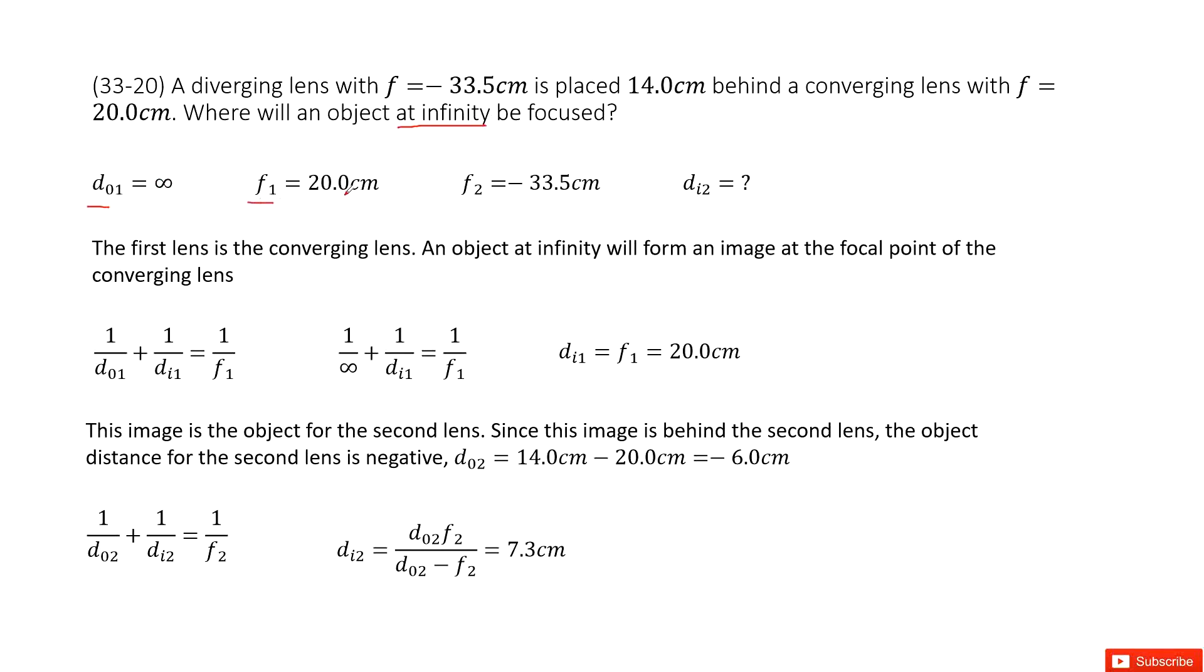The first focal length is given as 20 cm. The second focal length is negative 33.5 cm. We need to find the image distance for the second lens.